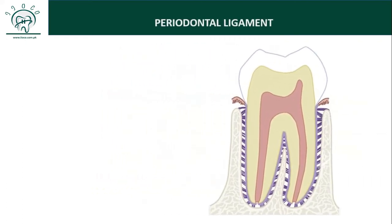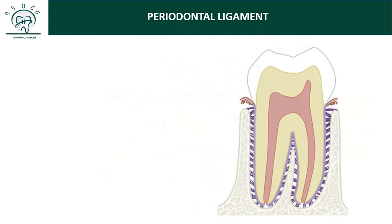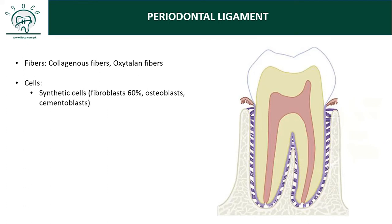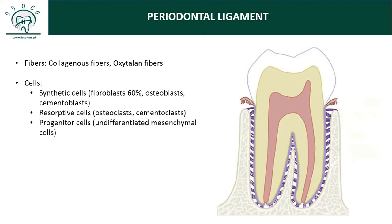Now let me go into some details about the periodontal ligament. PDL is a connective tissue, so just like all connective tissue it has fibers — most of them are collagen, and some oxytalan fibers are also there. It also has cells, which include fibroblasts (most of them), osteoblasts, cementoblasts, osteoclasts, cementoclasts, undifferentiated mesenchymal cells, lymphocytes, mast cells, macrophages, and epithelial cells.